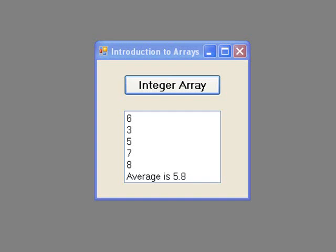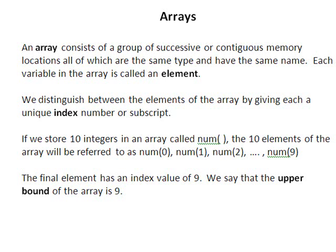Before we look at a sample program which uses an array, let's look briefly at how to work with them. We will begin with a definition of an array and some terms associated with arrays. An array consists of a group of successive or contiguous memory locations, all of which are the same data type and which have the same name. We can think of an array then as a group of variables each of which has the same name and the same type.